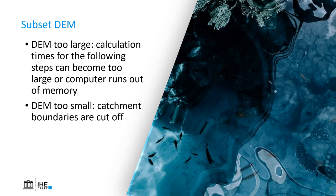But it should also not be too small, because then it will cut off the boundaries of your catchment in the delineation. A good way is to understand the elevation differences in your area of interest, to determine where the outlet is and where the source areas and divide could be by looking at the elevations. Then you make it a little bit larger to have a safety margin.